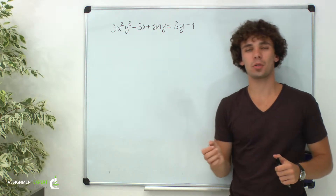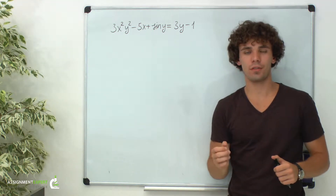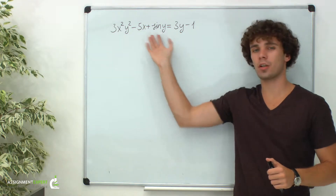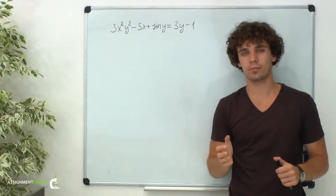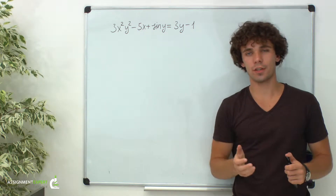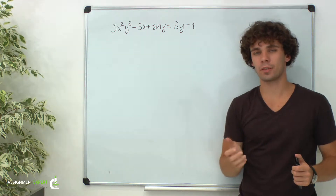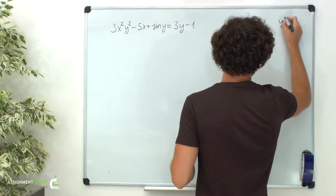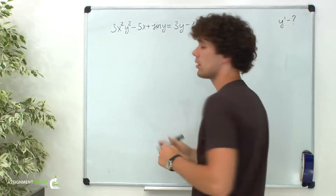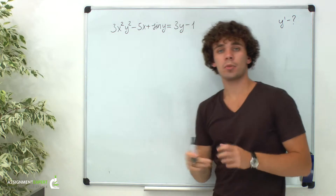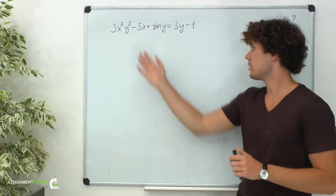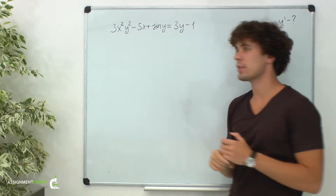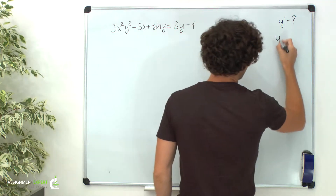Hello there! Suppose we need to find the derivative of a function y given by the equality on the board. So how do we find the derivative of a function given implicitly? For that, we need to differentiate both parts of this equality, but always keep in mind that y is a function of x.